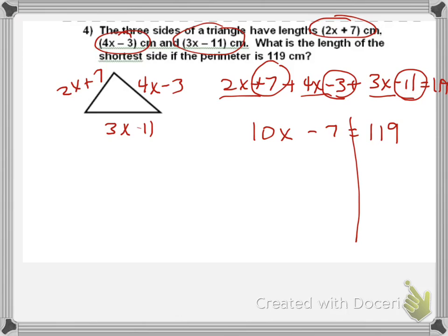Now, I start moving things across the equal sign. So, add 7 to both sides. 10X equals 126. I'm going to pause it right there.